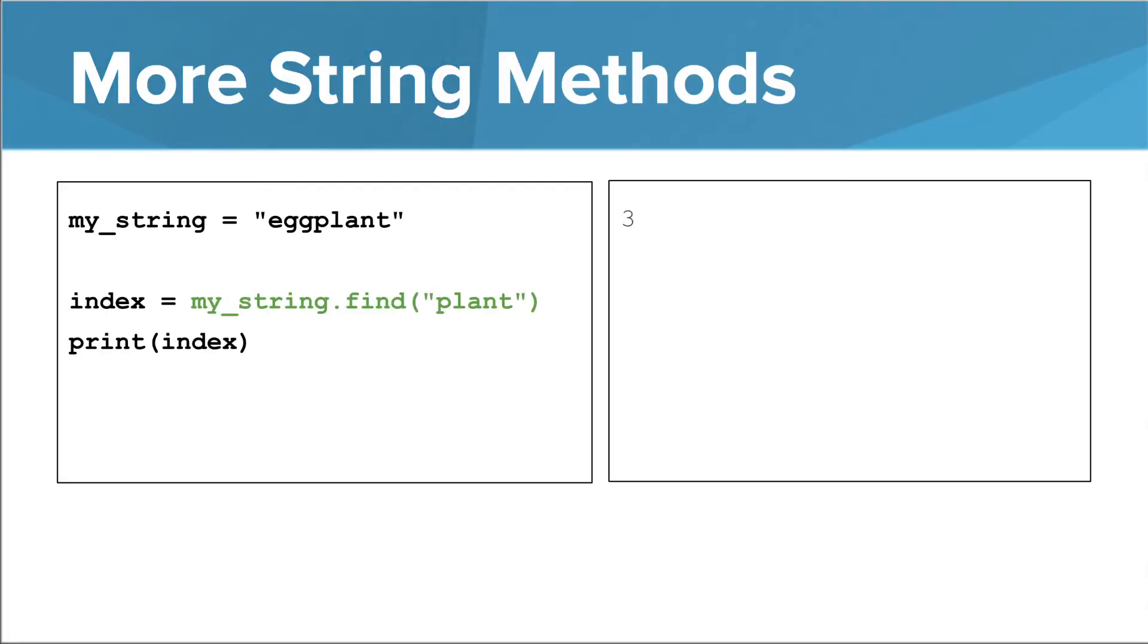The last method I'll show you in this lesson is different from the other ones in that it doesn't return a string. The method is called find, and it can be used to find an instance of one string inside another string. Here's how it works. When you call the find method, you call it on a string, and you also pass it a string as an argument.